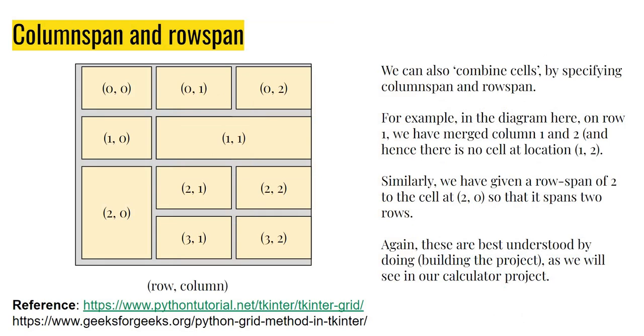Now, the interesting bit about this grid method is that we can, in fact, merge cells by controlling the row span and the column span. For example, look at this. Here, I've got four rows, three columns. But what I've done is that on the cell which is 1, 1, which would have been this small cell over here, I'm in fact merging this with 1, 2 and leaving with just one big cell of column span 2.